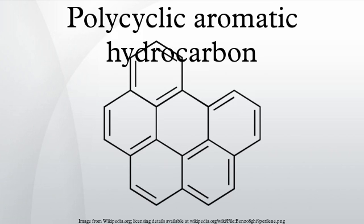Polycyclic aromatic hydrocarbons are organic compounds containing only carbon and hydrogen that are composed of multiple aromatic rings. Formally, the class is further defined as lacking further branching substituents off of these ring structures.